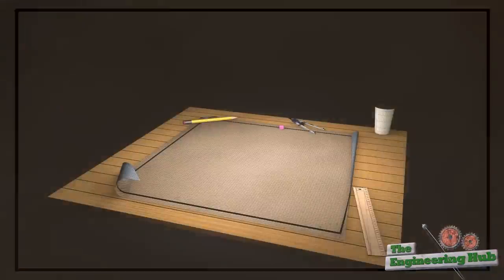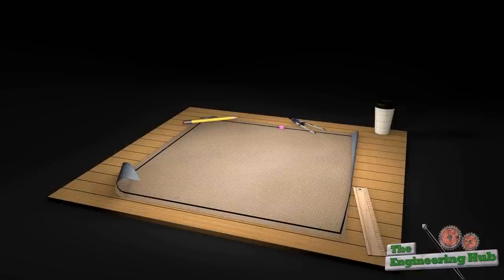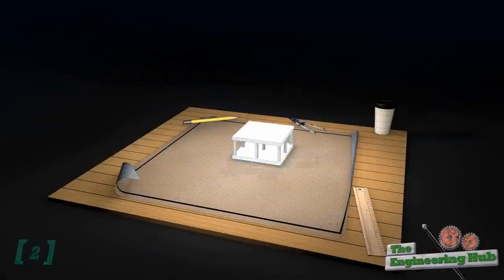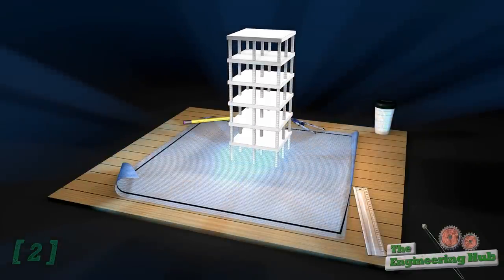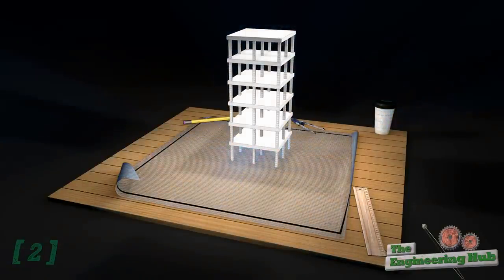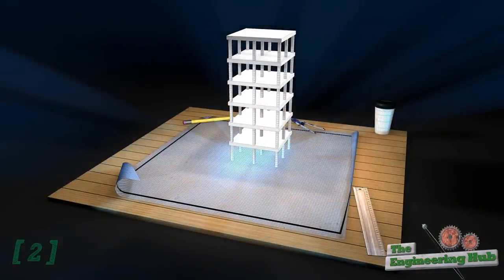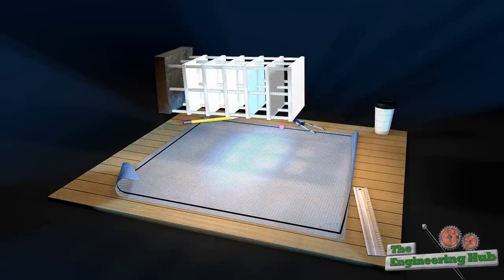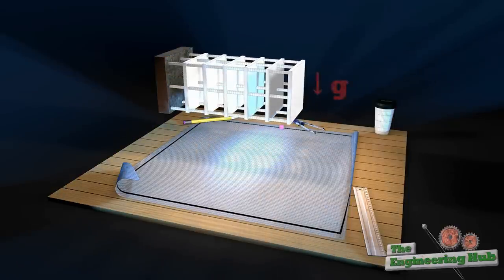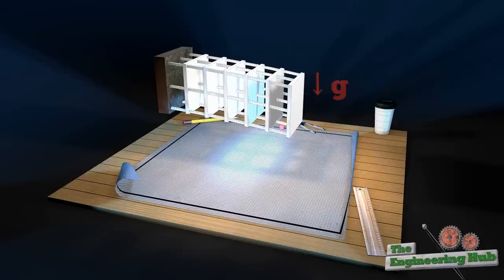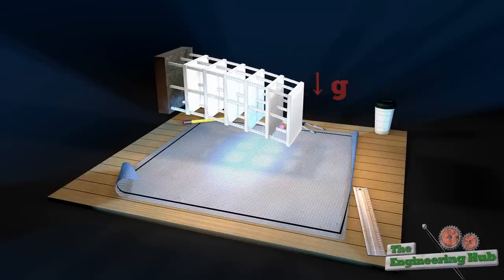The estimated peak ground acceleration for some places in California is as high as 1G. If the structure were perfectly rigid during an earthquake with a peak ground acceleration of 1G, the structure would undergo base forces as if it were built horizontally outwards from a cliff. Obviously, such a structure is not feasible — no material can withstand such forces.